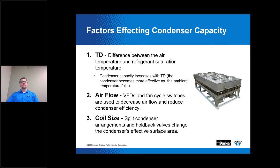Factor number two is airflow — VFDs and fan cycle switches are used to decrease airflow and reduce the condenser efficiency. Your third factor is coil size, and you directly impact the coil size when you use split condenser arrangements and condenser hold back valves that change the condenser's effective surface area. As your ambient temperature falls, less heat may need to be rejected, but the increased TD allows the condenser to reject more heat, causing a drop in your high side pressure. As that pressure continues to fall, further actions can be needed to prevent it from reaching unacceptable levels that would impact system performance negatively.